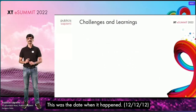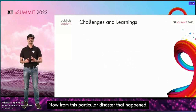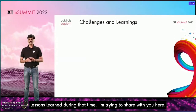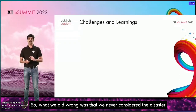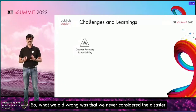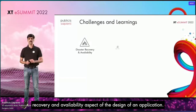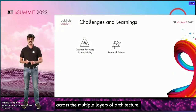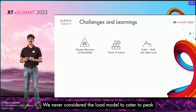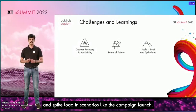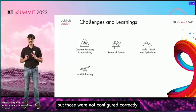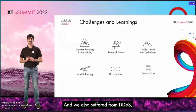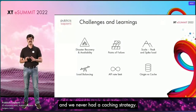From this particular disaster, we not only lost time, but also credibility. The lessons learned during that time, I'm trying to share with you here. What we did wrong was that we never considered the disaster recovery and availability aspects of application design. We never thought of the points of failure — single or multiple — across multiple layers of architecture. We never considered the load model to cater to peak and spike loads in scenarios like a campaign launch. We had load balancing, but it was not configured correctly. Our APIs were not rate-limited, and we also suffered a DDoS attack. All requests were being served from origin, and we never had a caching strategy.